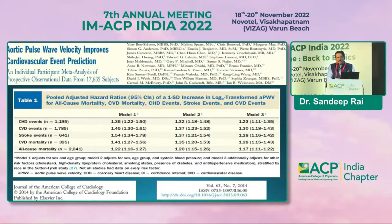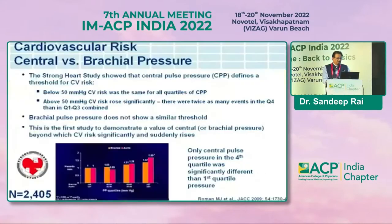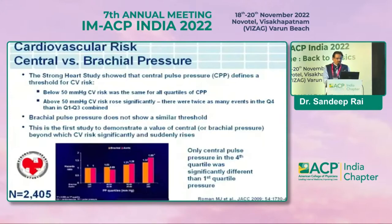Every diabetic, every pre-diabetic, every hypertensive, and every person with a family history of premature coronary artery disease should have pulse wave velocity and endothelial function assessed. One strong study has shown that if your central pulse pressure is more than 50 mmHg, you are twice as likely to get cardiovascular events compared to when it is less than 50. So central aortic pulse pressure is very important and may not equal your brachial pulse pressure.